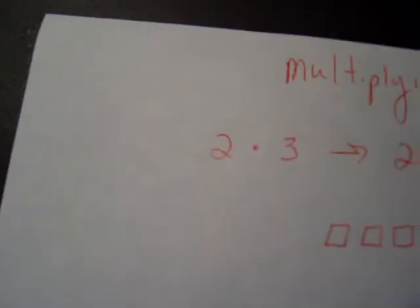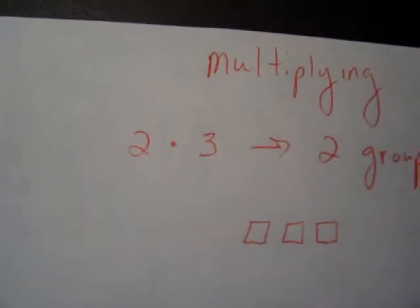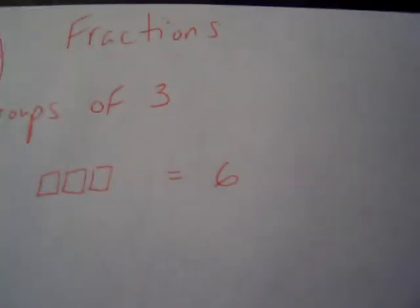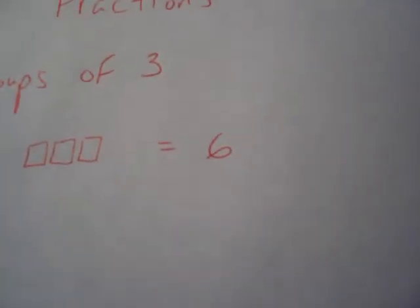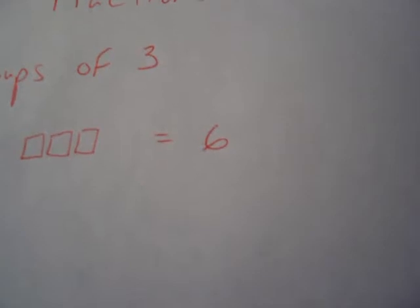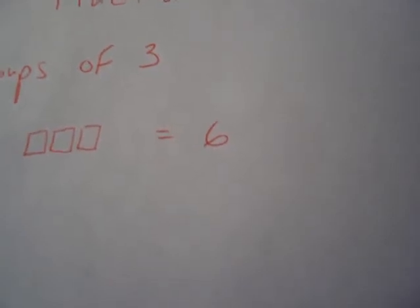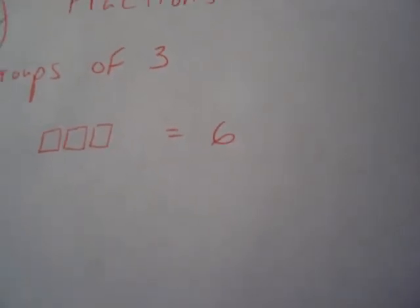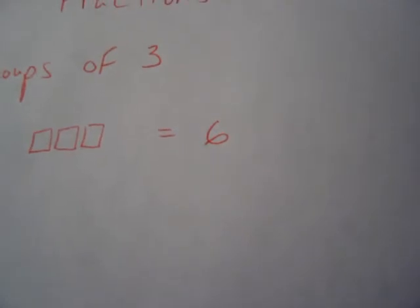Notice that we started with 2, and we multiplied times 3, and we ended up with 6 being the product, and 6 is bigger than either of those two. But the question we're going to talk about now is when you multiply, does the answer, the product, always get larger?